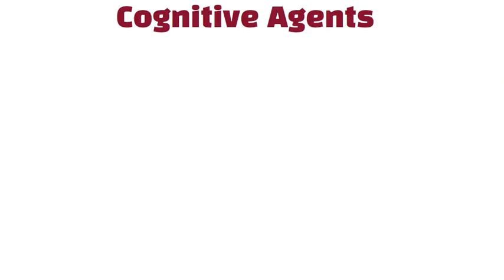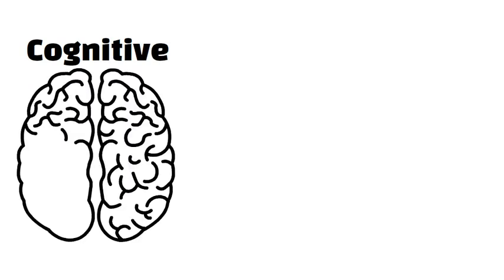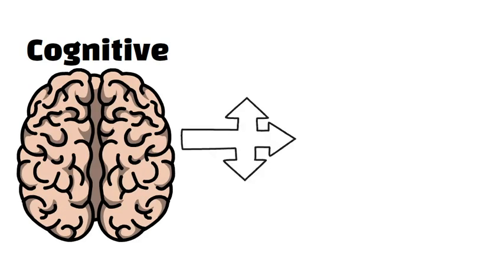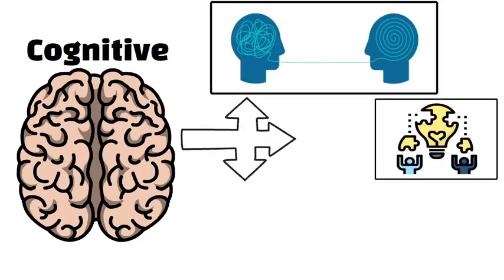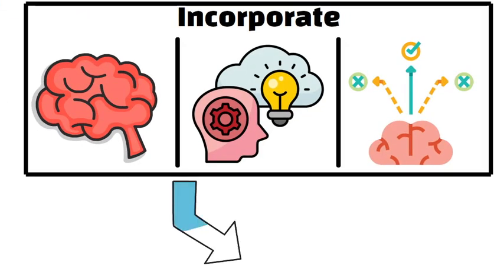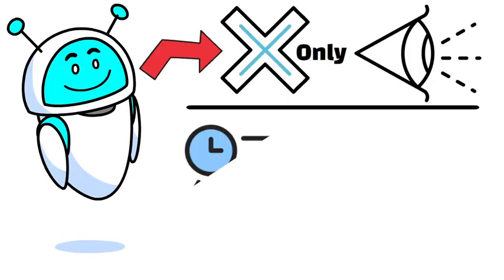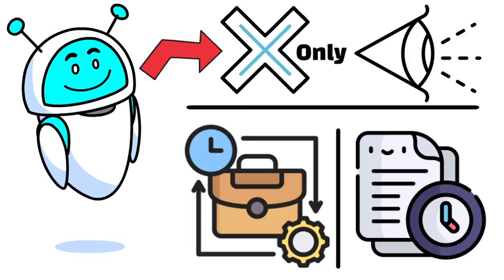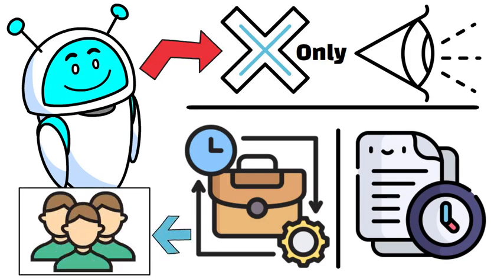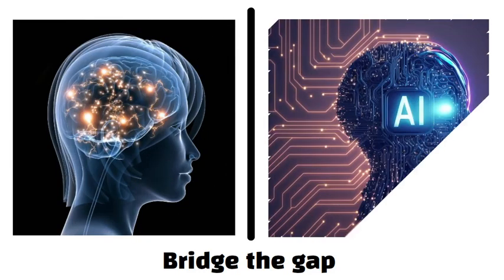Cognitive agents are designed to mimic human thinking processes. They use methods inspired by cognitive psychology to interpret information, solve problems, and learn from experience. These agents often incorporate memory, reasoning, and decision-making processes similar to how humans operate. Picture an AI that not only reacts to what it sees but also reasons about past experiences and plans for the future, much like a human would. Cognitive agents are at the frontier of research aiming to bridge the gap between human intelligence and artificial intelligence.